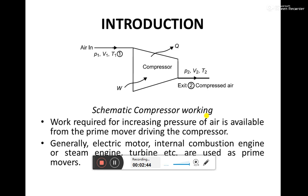Moving on to the working: this shows the air inlet at pressure P1, volume V1, and temperature T1. Some work is given and some heat gets rejected through the compressor. A prime mover — such as an electric motor, IC engine, or steam turbine — is used to give power to the compressor, which then compresses the air and delivers it as compressed air.